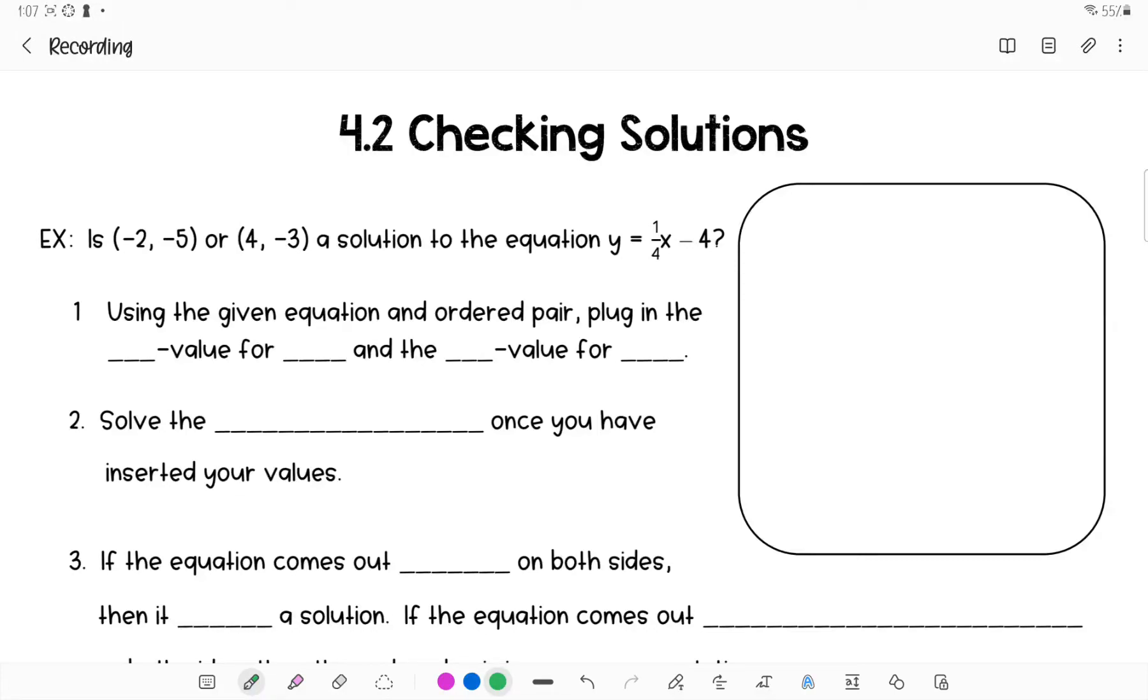We're starting with checking solutions. This should be more of a review to you. You've mostly done them with expressions, like plugging in numbers. Today we're going to be using both the x value and the y value from our equation and see if the ordered pair they gave us actually is a true ordered pair for that line. In other words, if we were to graph this line, we're trying to see would it pass through this point or would it pass through this point.